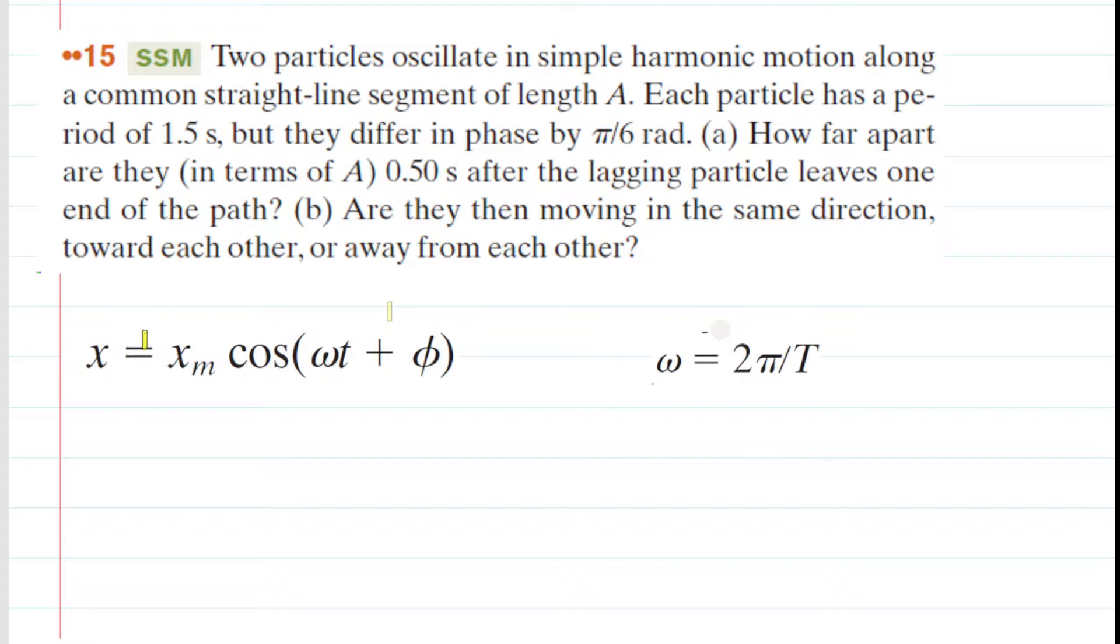We've learned in this chapter that for particles experiencing simple harmonic motion, their position as a function of time is dictated by this equation. We're going to set up an equation for both particles 1 and 2. In addition, the omega term, the angular frequency, can be substituted with 2π divided by the period. So we're going to rewrite the position equation making that substitution. We've replaced omega with 2π over the period.